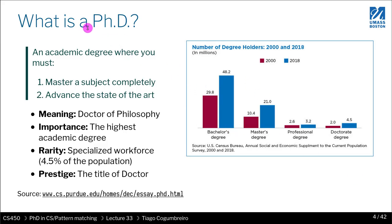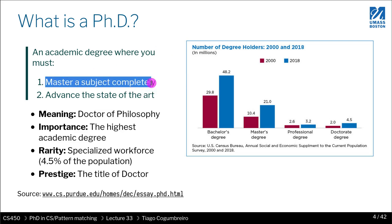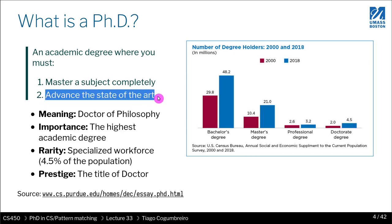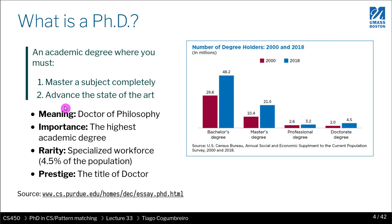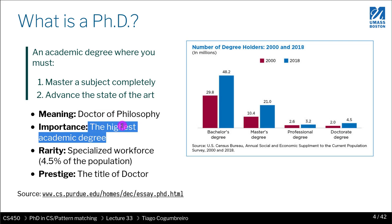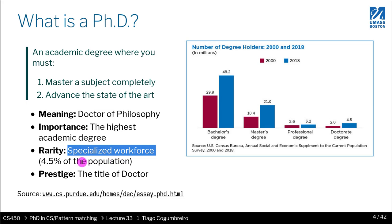So first, what does it mean? PhD means Doctor of Philosophy, and the objective of a PhD is a degree where you will master a subject completely and advance the state of the art. You will do something that no one has ever done, and you will need to show the impact of that. This is the highest academic degree, and it is quite rare — only 4.5% of the US population has a PhD. For some people, there is a certain prestige in the title of doctor.